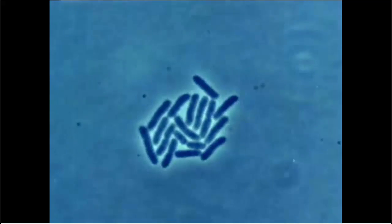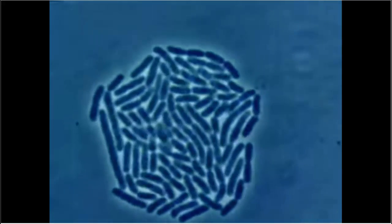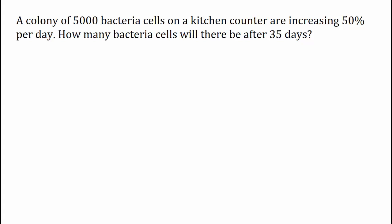Instead of growing by a constant amount, bacteria grow at a constant rate. A colony of 5,000 bacteria cells on a kitchen counter are increasing 50% per day. How many bacteria cells will there be after 35 days?